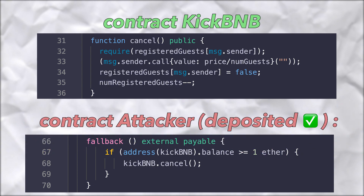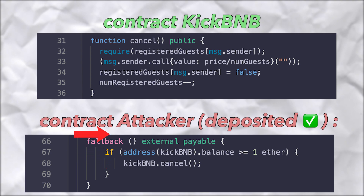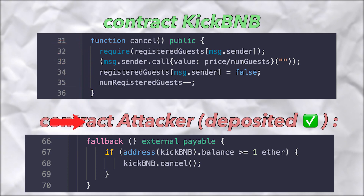Let's say we have already deposited money and we call cancel. It checks that we've deposited the money and then sends us the money. It also calls the fallback function in our attacker code, where we check that there's still money to be taken and then re-enter the cancel function. The values tracking whether we've deposited money haven't been updated yet, so it still thinks we've deposited. It keeps sending money and calling the fallback function over and over again until all the money deposited by other people is taken.